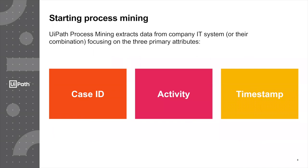So what are the three main data attributes that we need in order to execute process mining? First of all, something that we call a case ID. A case ID is the unique item, the thing that you're tracking through the process. If we think of a financial process, that would be an invoice number, which is unique for a single invoice going through that process. The next thing we need is an activity — something that has been executed related to that case ID. Going back to the invoice example, it's either receiving the invoice, approving the invoice, or paying the invoice. Those are the activities related to that specific case ID.